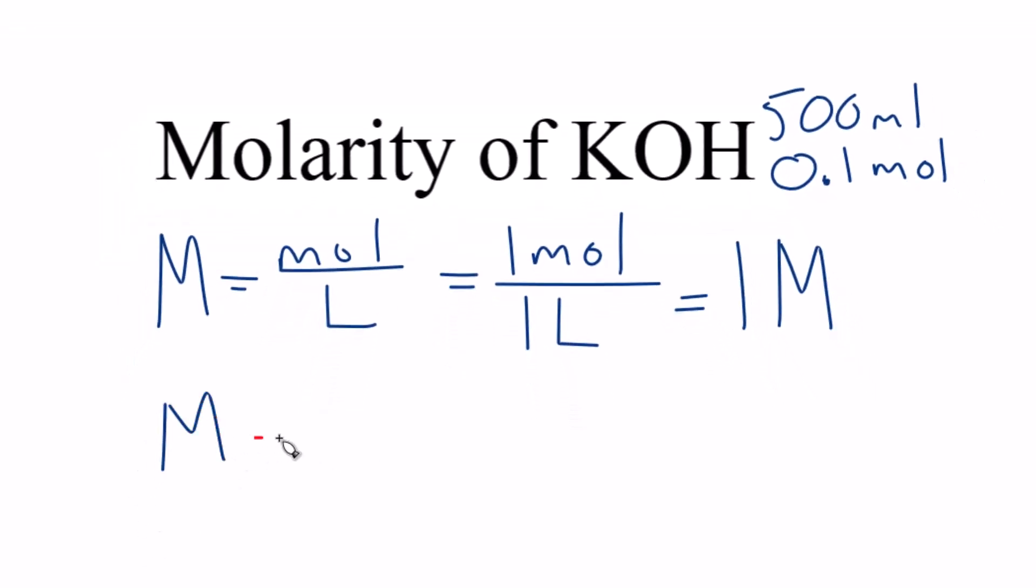So molarity equals, we have our 0.1 mole, and then we're going to divide 500 by 1,000 to get liters. That gives us 0.5 liters. Now we do the math: 0.1 divided by 0.5 gives us 0.2 moles per liter, which we just call molarity.